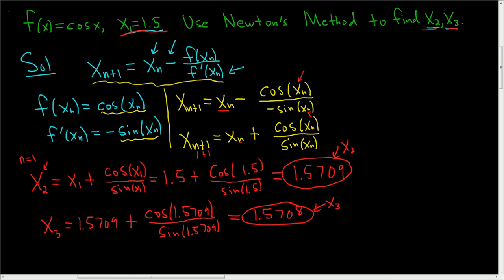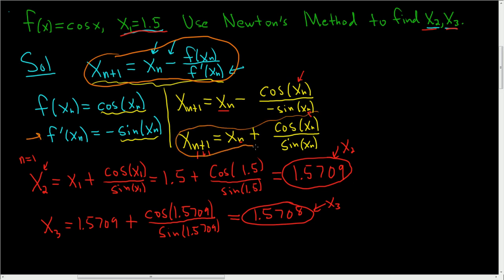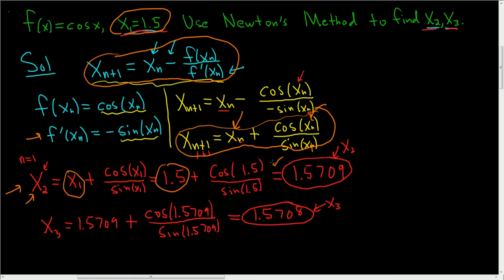To recap: whenever you're using Newton's method, just write down the formula. Take your derivative — we did that here — and clean it up to get your formula. We have x₁, so you replace x sub n with x₁ and work it out. We replaced all the x₁s with 1.5, put it in your calculator — make sure you're in radians, otherwise you'll get a different answer — and there's x₂. Once you have x₂, you plug it back into the formula to get x₃. Really easy. It's just about knowing the formula and being careful. I hope this helps.